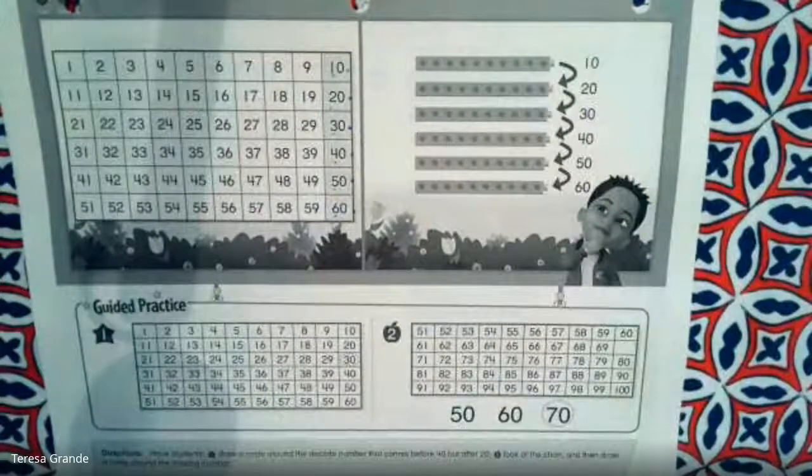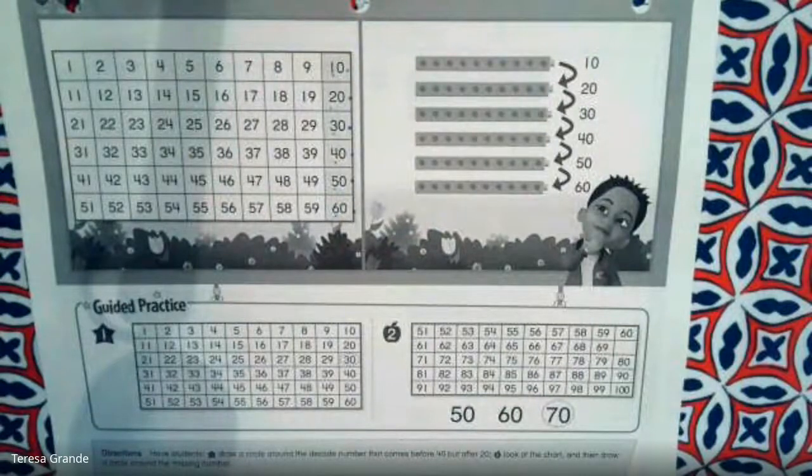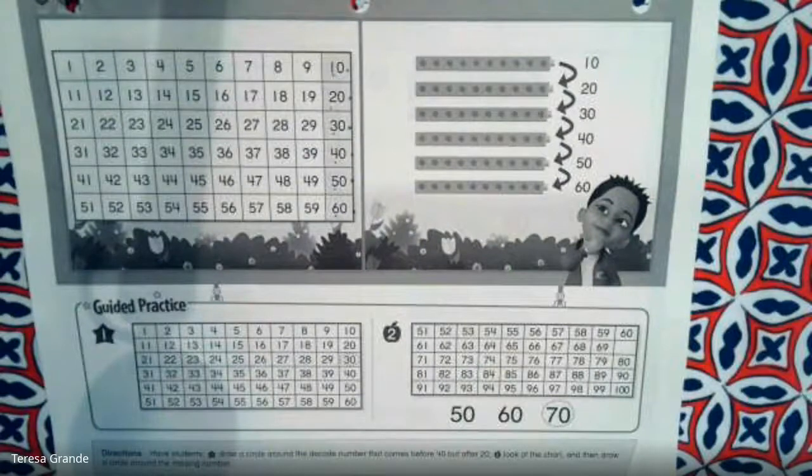So, we're counting by 10s. And what we're going to do whenever we look at these numbers is we're going to start with one number and we're going to count up by 10s.